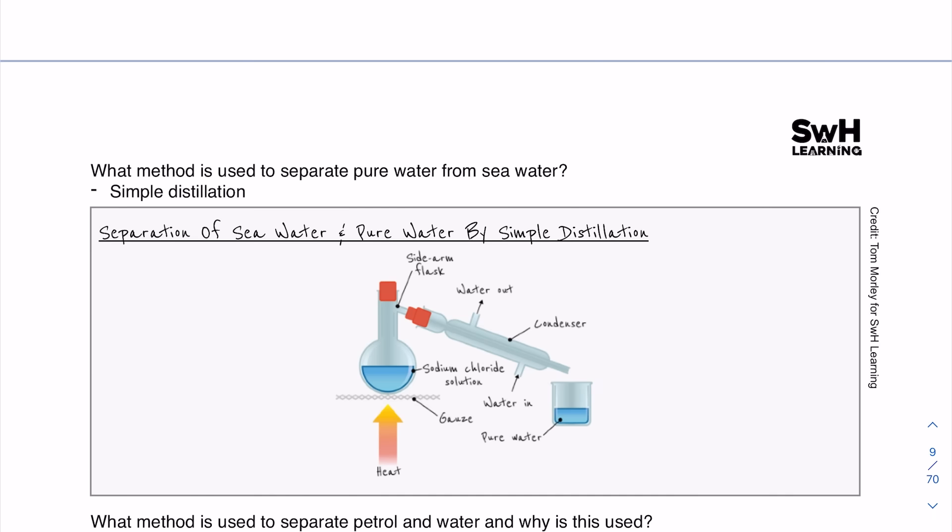I'm just going to quickly show you some other apparatus. So here's your Bunsen burner again, your gauze. This time we're just showing simple distillation which can be used to separate things like sea water from pure water, ethanol from water. Now this here, notice the shape of it, is known as a round bottom flask. We have a bung up here.